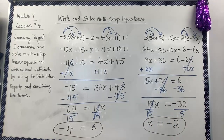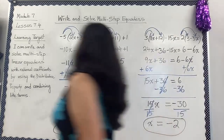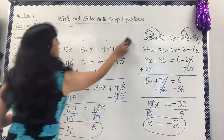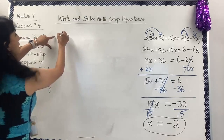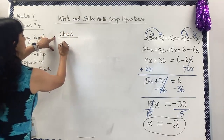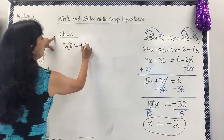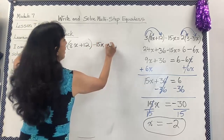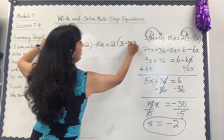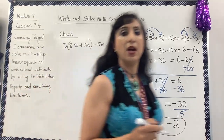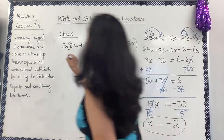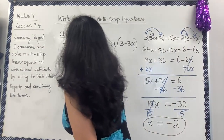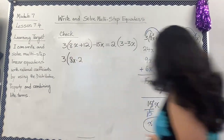That is the solution. Let's quickly check to make sure we're on the right track. We write the original equation: 3(8x + 12) minus 15x equals 2(3 minus 3x). I found that x equals negative 2, so I'm going to substitute that in — this is 3 times 8 times negative 2 on this part, because x is negative 2.